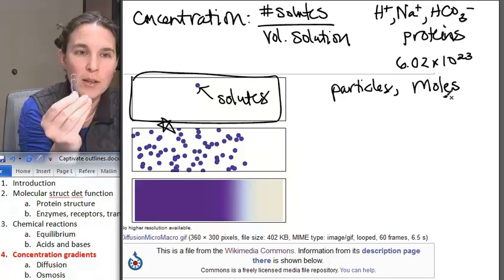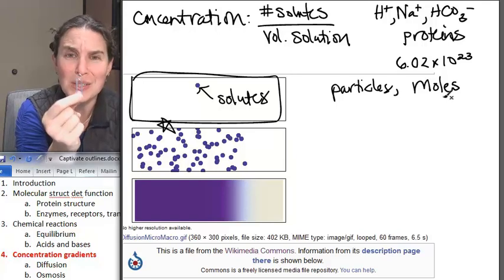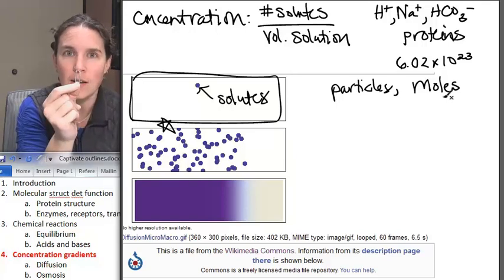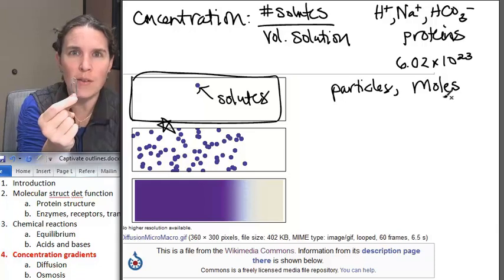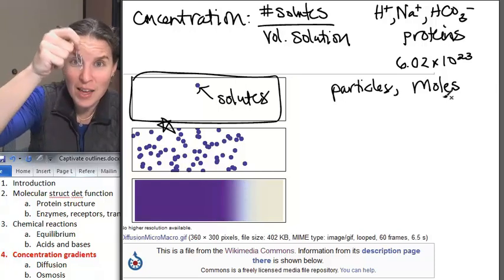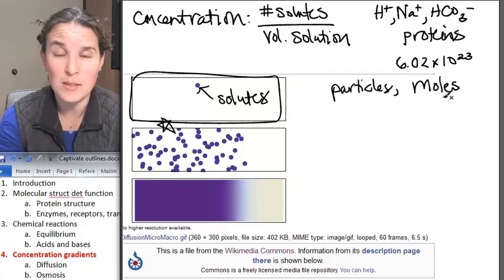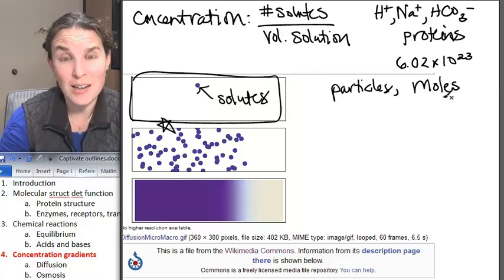This paper clip weighs one gram. There are 602 sextillion hydrogen ions in here, but it would be more if this was made out of hydrogen ions. But it isn't. But you get the idea. That is not very heavy for 602 sextillion atoms. A mole is a giant number.